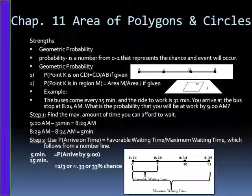Step one, find the maximum amount of time you can afford to wait. So if you take 9 o'clock and subtract 31 minutes, it'll be 8:29 AM. And you take 8:29 AM and subtract 8:24 to get 5 minutes.